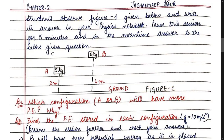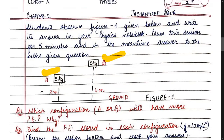Question one: which configuration — A or B — will have more potential energy? Give a reason. Question two: find the potential energy of both cases. Take G as 10 m/s². Pause the session and write down your answers.